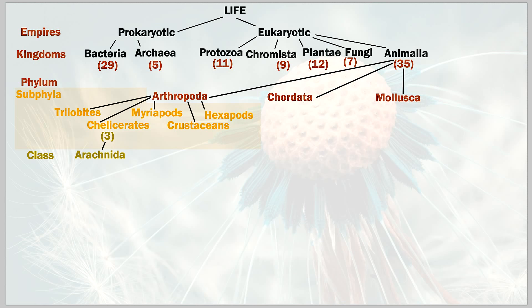Myriapods have four classes under them; crustaceans have seven — so they do in fact have classes. Hexapods also have classes. The trilobites break down to order next, which is the next level of classification, so they skip the class system.